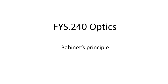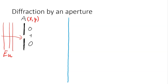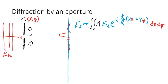One useful relation in the evaluation of diffraction is known as Babinet's principle. We have an aperture — a hole — which is defined as a function with a value of zero when it's opaque and one when it's transparent. An incident plane wave diffracts from the aperture and we are interested in its diffraction pattern at a screen. It can be calculated from the diffraction integral, and in the far field we are dealing with Fraunhofer diffraction.